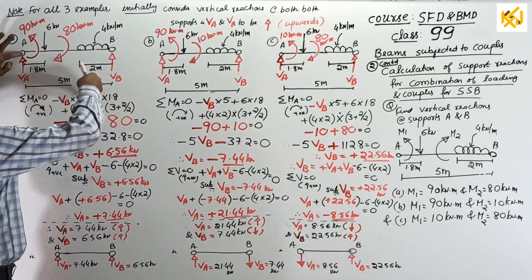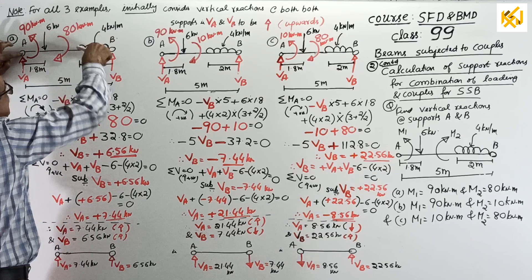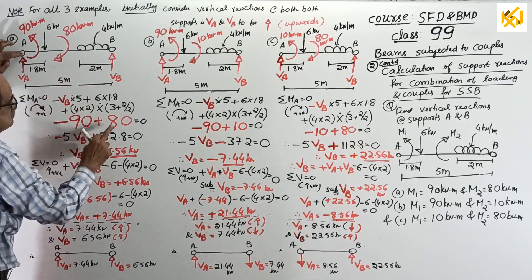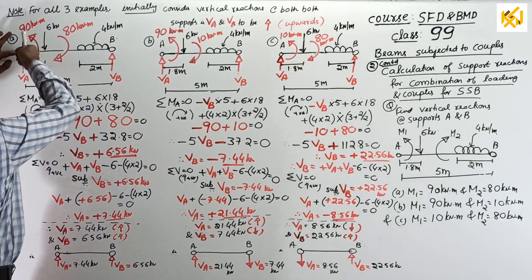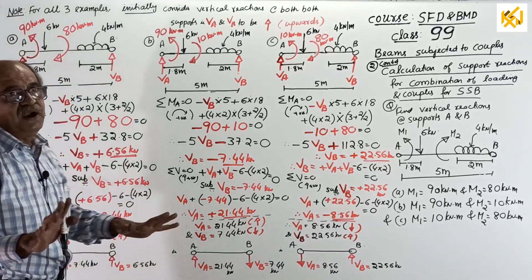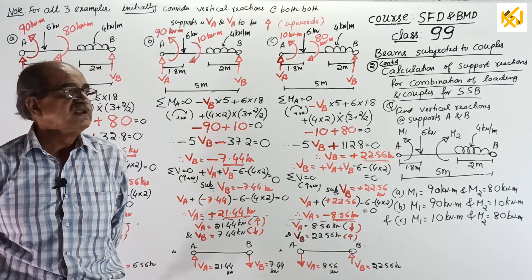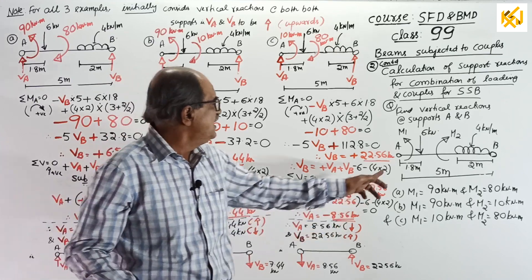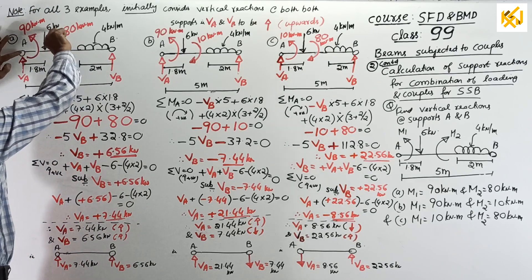Take moment about A. Clockwise positive, minus VB into 5, plus 6 into 1.8, plus 4 into 2 into, see, this is 5 meter, so this will be 3 meter, 3 plus half of 2. Then, that's all, if only loading is there. But, couples are there. Therefore, couples, there is no distance, minus 90, plus 80. See, where are these couples are not required today? Because, when you do reaction calculation, we want only value of couple and direction. But, when you go to SFD-BMD, you should know, where is it? Today, purpose is only reaction. So, you can take whatever distance you want. So, here, minus 90, why minus, anti-clockwise, plus 80, equal to 0.